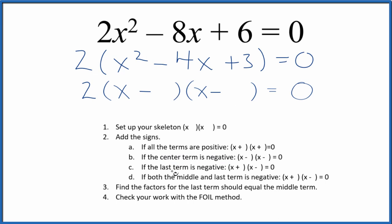Now we can find the factors for the last term. That's the 3 here, and that should equal the middle term, the 4. So for 3 it's just 1 times 3. Put a 1 in here and a 3 here, and this should work.